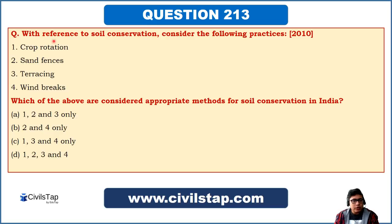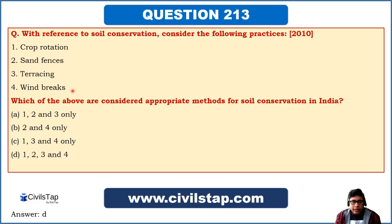The next question: with reference to soil conservation, consider the following practices — crop rotation, sand fences, terracing, and windbreaks. Which are appropriate methods for soil conservation in India? All four options are soil conservation practices used in different parts of India, so the correct answer is D — 1, 2, 3, and 4.